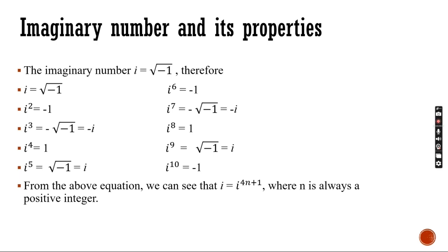From the above equation, we can see that i equals i to the power of 4n plus 1, where n is always a positive integer.